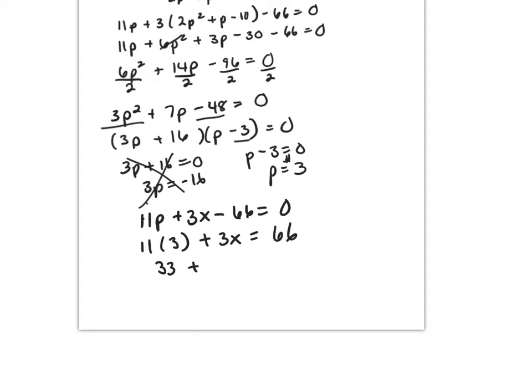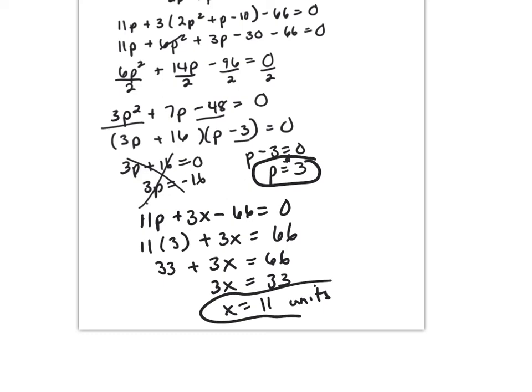I'm going to move that 66 to the other side. That's 33 plus 3X equals 66. Subtract 33 from both sides: 3X equals 33, so X equals 11 units. So my equilibrium price is $3 and equilibrium units is 11.